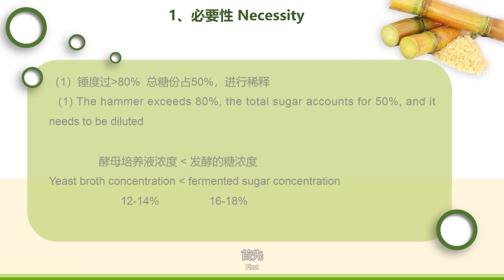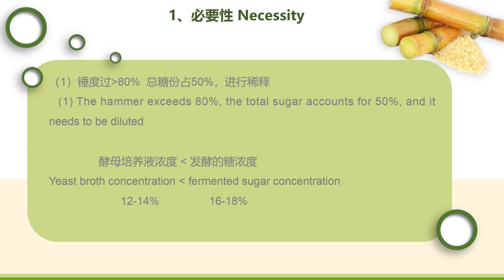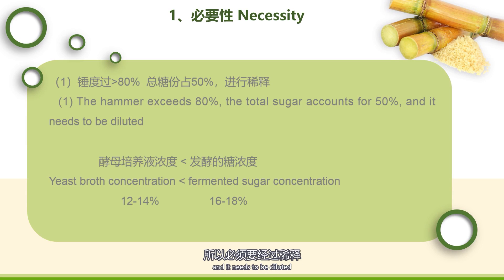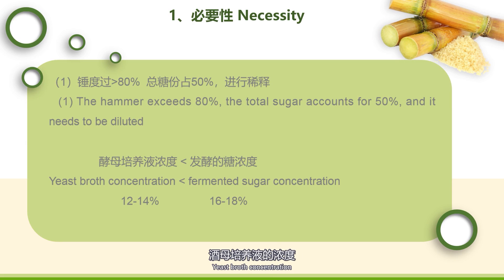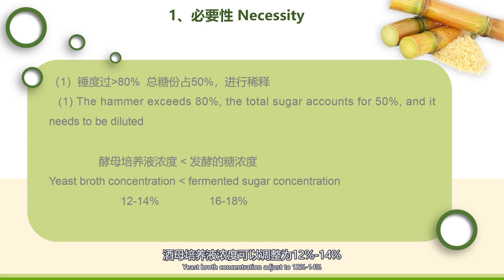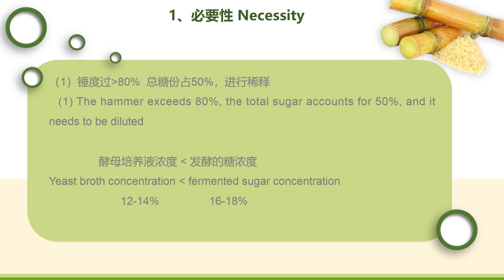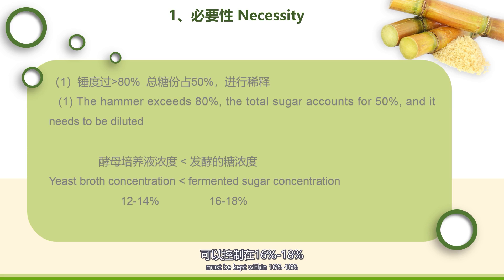来看一下预处理的必要性。首先，糖蜜的糖度远大于80%，总糖分占50%以上，所以必须要经过稀释。通常酒母培养液浓度要低于发酵稀糖液浓度，酒母培养液浓度可调整为12%到14%，而发酵稀糖液浓度可控制在16%到18%。